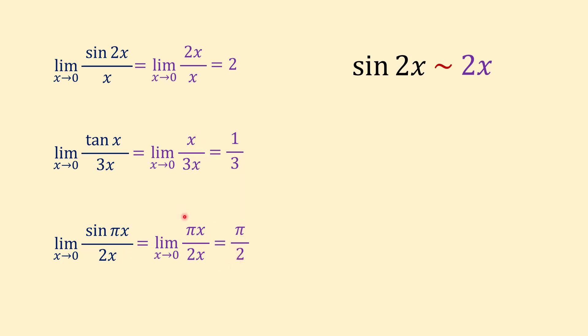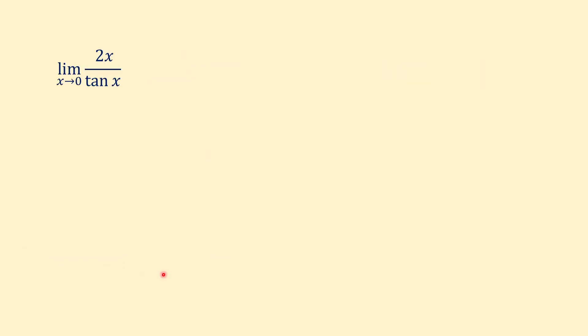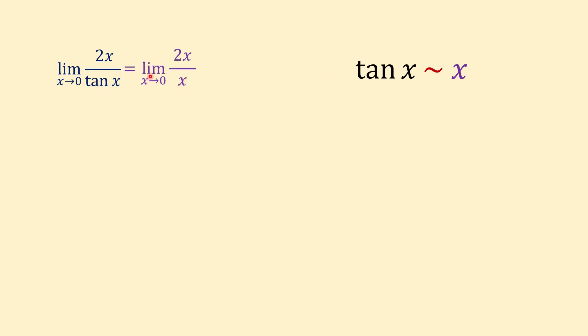In these three examples you can see how easily we can find these limits with the shortcut method. Another example: limit of 2x over tangent of x when x approaches 0. When x approaches 0 we can replace tangent of x with x, so our limit equals the limit of 2x over x when x approaches 0. If we cancel x from numerator and denominator, the value of the limit is 2.